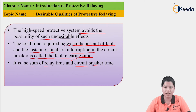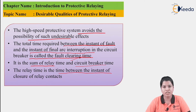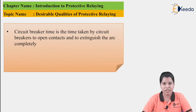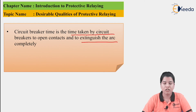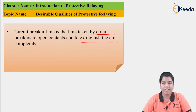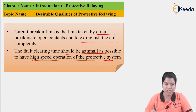Relay time is the time between the instant of closure of the relay contacts. Under normal operating conditions the relay contacts are open; when a fault occurs the relay contacts close. Circuit breaker time is the time taken by the circuit breaker to open its contacts and extinguish the arc completely. Under normal operating conditions the circuit breaker contacts are closed; when the relay sends a signal, the contacts should open. The fault clearing time should be as small as possible to achieve high speed of operation.